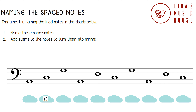The next note is in the fourth space. The fourth word in All Cows Eat Grass is Grass, so this is a G note. The next note is in the third space. The third word is Eat, so this is an E note. The next note is also in the third space, so this is an E note. The next note is in the second space — Cows — so this is a C note.